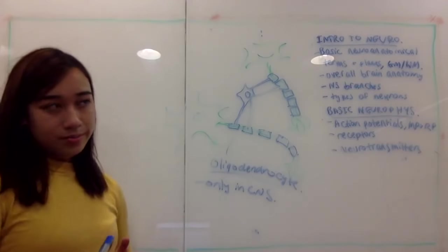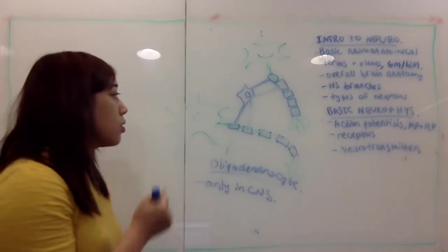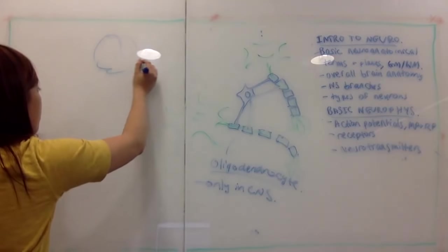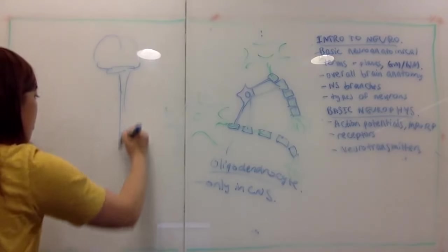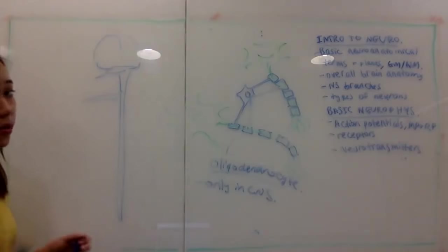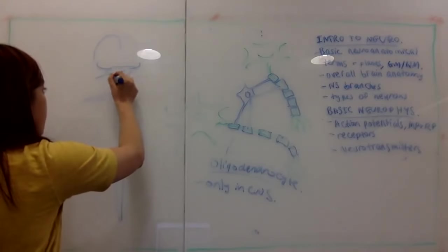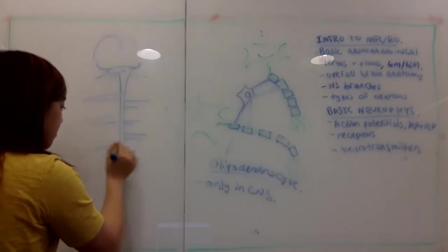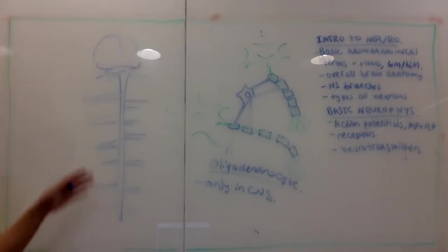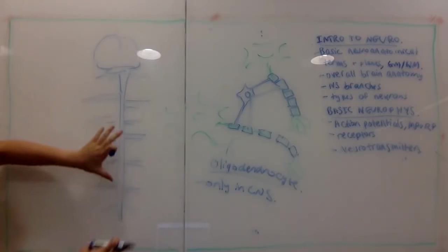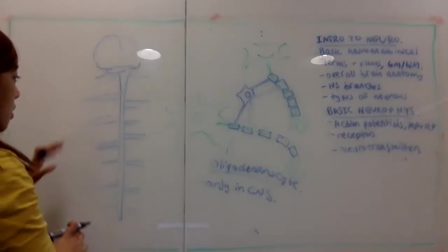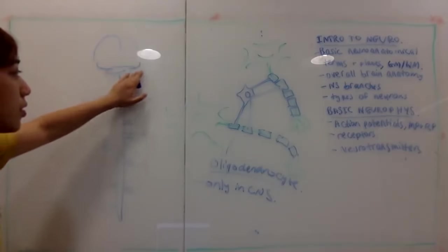The CNS is strictly the brain and the spinal cord. All the nerves coming out — including cranial nerves — are peripheral nervous system. The oligodendrocyte's main role is to myelinate the axons of neurons in the brain. A helpful memory tip: 'oligo' means a few, roughly two to five, which represents how many branches it typically myelinates.